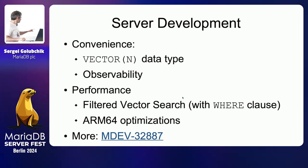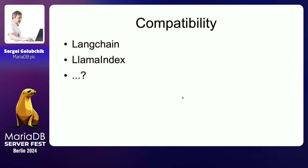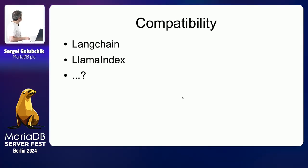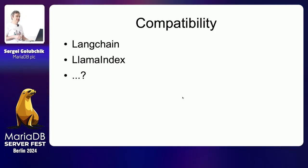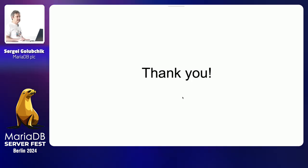Those were four different features I managed to put on one slide. The other direction of development is making known frameworks use MariaDB — starting with LangChain and LlamaIndex, and then others depending on what's popular and what users ask for. That's pretty much the development plan. Thank you.